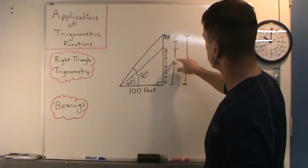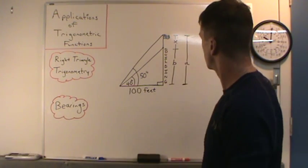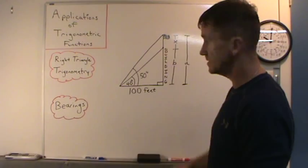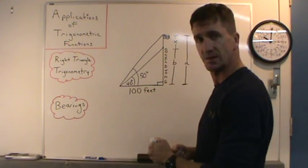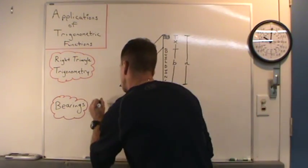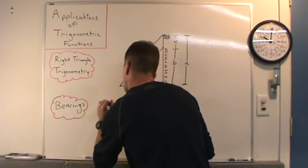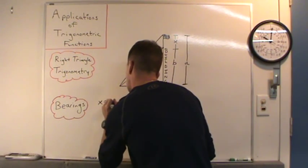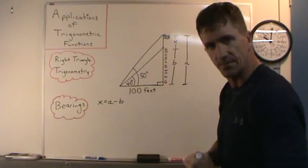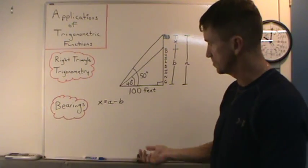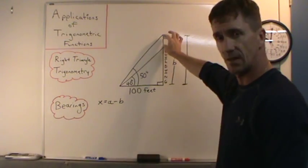So x plus b equals a. Then that means x must equal a minus b. So x equals a minus b. So if we can find a and if we can find b, we'll just subtract them to get x — the height of that flag.